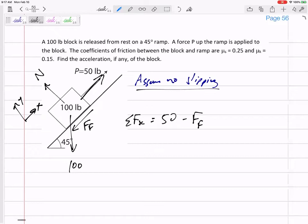And it could be anywhere from zero all the way up to the maximum. So minus 100 sin 45 equals ma. But if I'm assuming no slipping, that a is zero, so the force of friction would be...